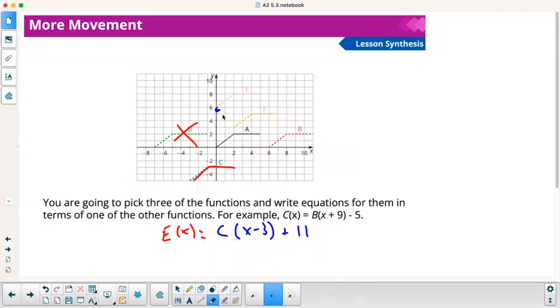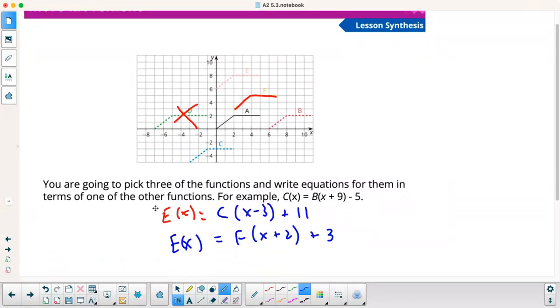And then let's do another one. Let's do, let's do, let's do E of X again. But this time I'm going to do it in terms of F. So to get from F, I have to go left two and then up three. So I'm going to say X plus two to go left two and then plus three to go up three.